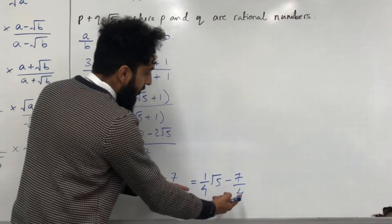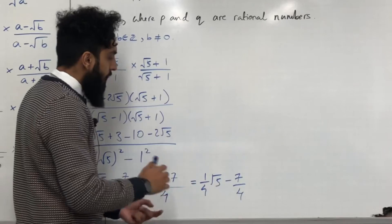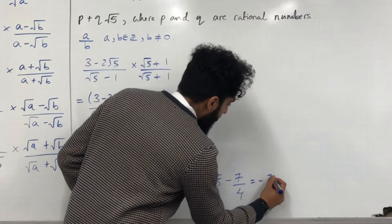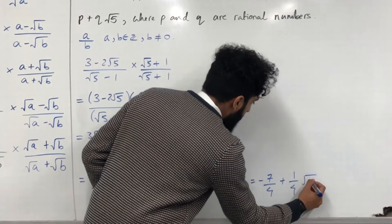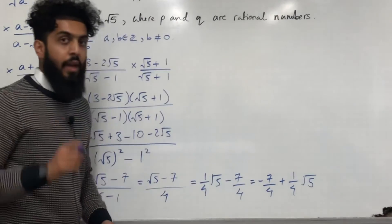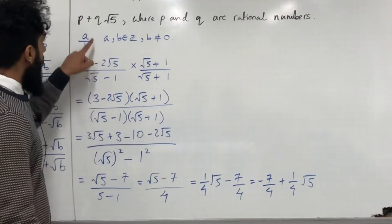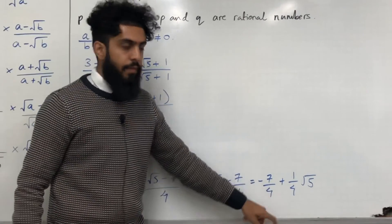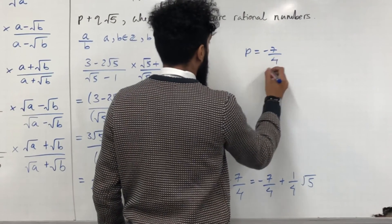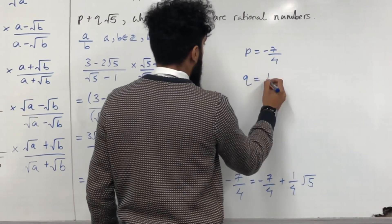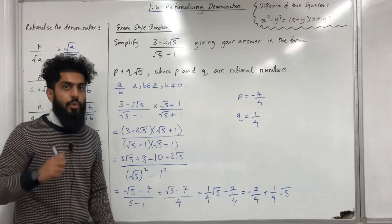Swapping the terms to match the required form gives −7/4 + (1/4)√5. Hence p = −7/4 and q = 1/4. Both p and q are rational numbers, confirming the answer is in the correct form.